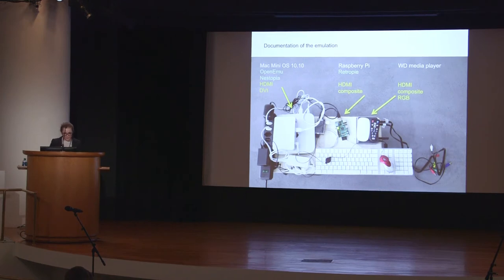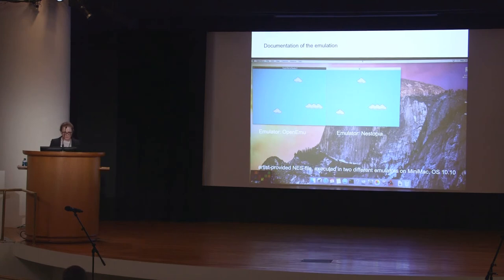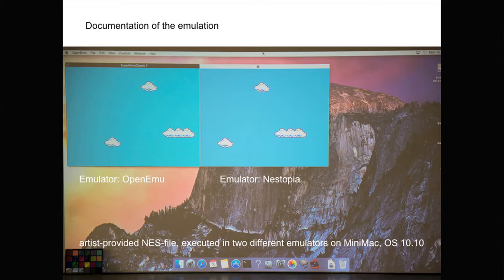I want to start at the very right here. This is a Western Digital Media Player where we stored the digitized signal to have another reference to it. Then here in the middle, we have the Raspberry Pi that is running the emulation software RetroPie. And here we have a Mac Mini with two emulators, OpenEmu and a Nestopia emulator.